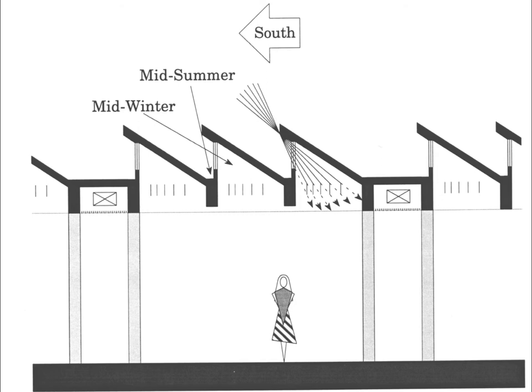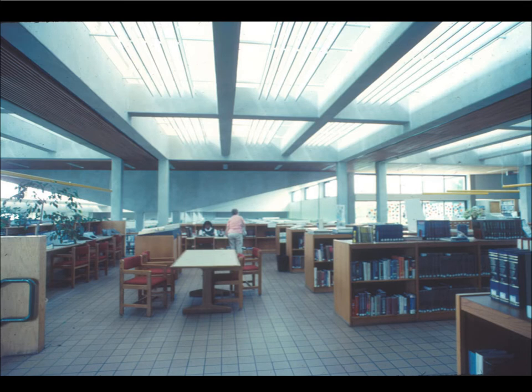This is another example — the Mount Airy Library, where the south-facing apertures with overhangs have been spaced quite close together. As a consequence, the light level at the task surface is very uniform, varying only slightly across the task space.